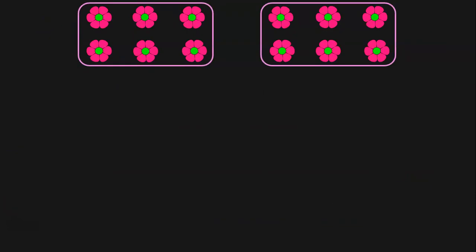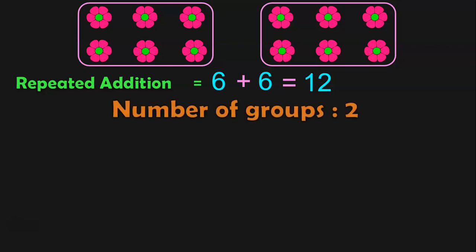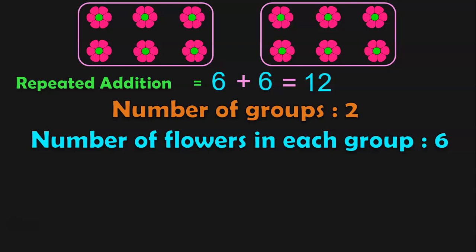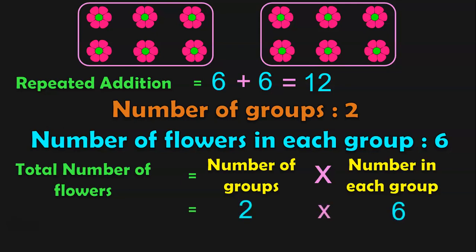Let us do another sum. Here we have 2 groups and there are 6 flowers in each group. How do you do Repeated Addition? 6 plus 6 is equal to 12. Number of groups is 2 and number of flowers in each group is 6. So, total number of flowers will be number of groups into number in each group. So, 2 into 6 — this is the multiplication statement and the answer is 12.